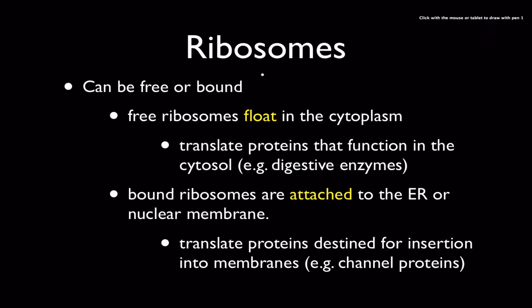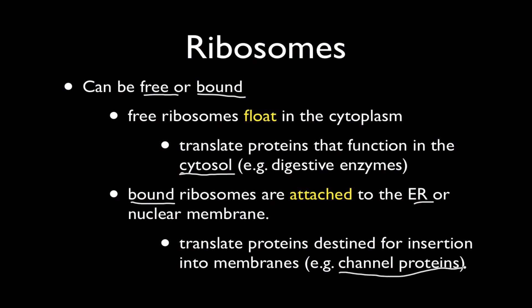Ribosomes come in two kinds — they can be either free or bound, and they alternate between these two forms. Free ribosomes are floating in the cytoplasm, and generally they are translating proteins that function in the liquid part of the cytoplasm, also known as the cytosol — for example, digestive enzymes like sucrase and amylase. Bound ribosomes, on the other hand, are attached to the ER or the endoplasmic reticulum, or maybe to the nuclear membrane, and their job is to translate proteins destined to be inserted into membranes — for example, channel proteins that provide portholes through which things can enter and exit cells.